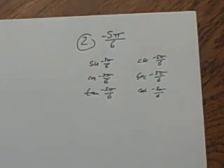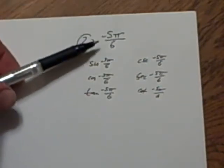This is Math 142, practice test 1, problem number 2. We're given this angle, negative 5 pi over 6. We're supposed to find the 6 trig functions for it.